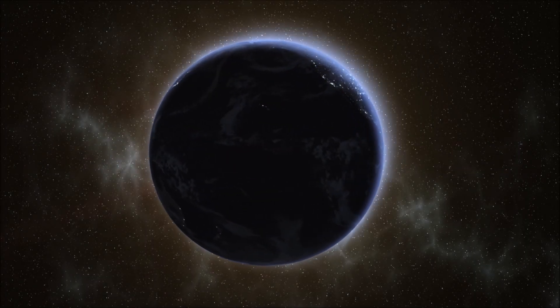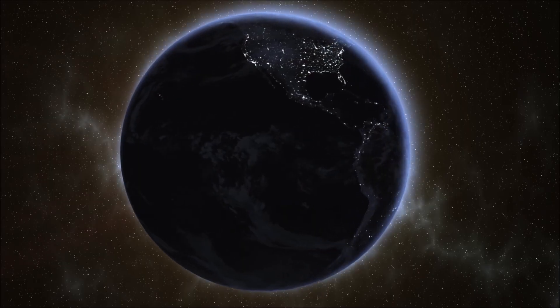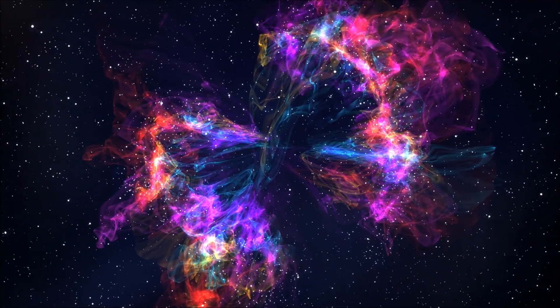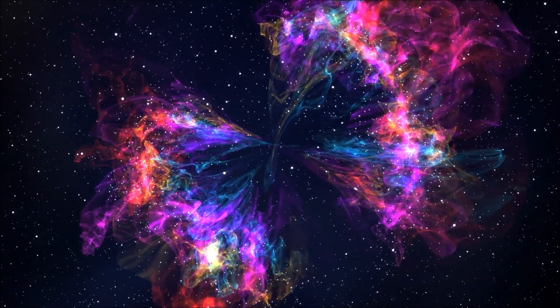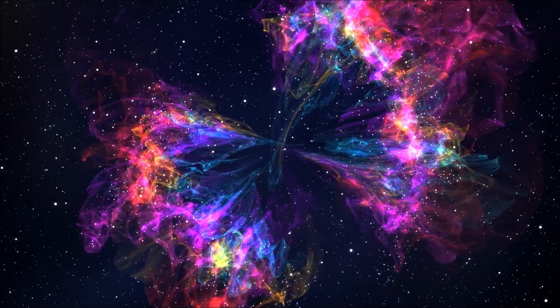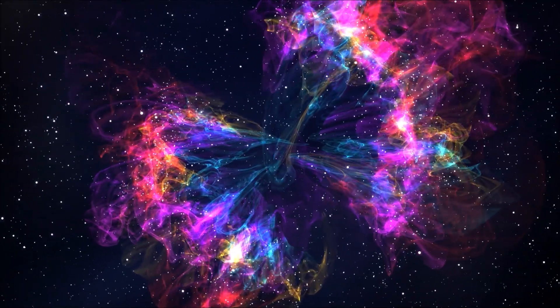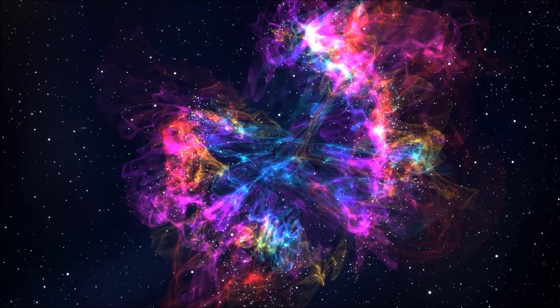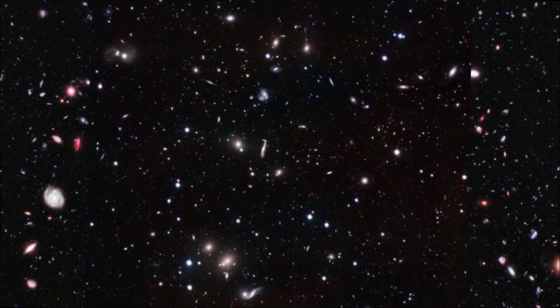Our observable universe grows at the speed of light, so any anomaly disappearing over the cosmic horizon would, hypothetically speaking, need to move faster than light in order to escape from our field of view. This should be impossible, according to special relativity. And yet, this is exactly what as many as an estimated 96.4% of all galaxies we have ever observed have already done.